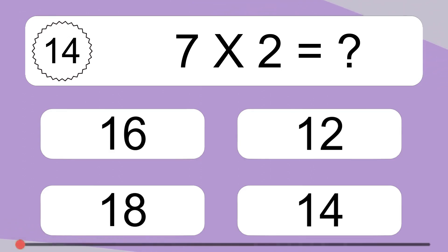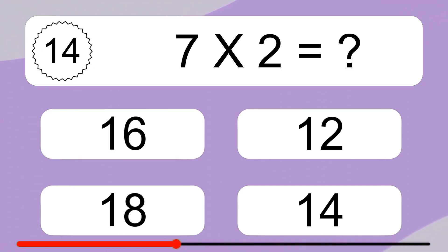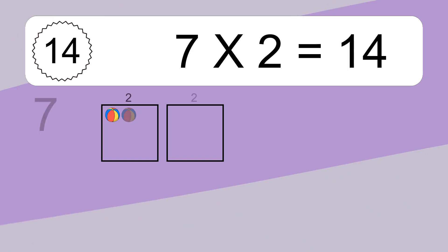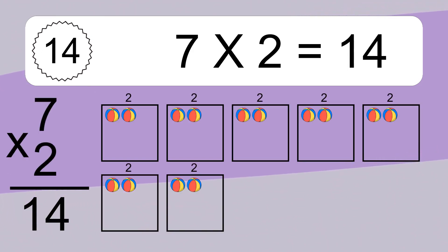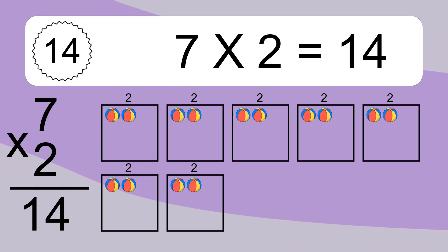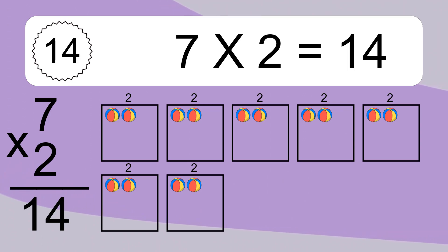7 times 2 equals what? 7 times 2 equals 14. We have 7 boxes, and each box has 2 colorful balls inside. If you count all the balls in all the boxes together, you will have 7 times 2 balls. This equals 14 balls.